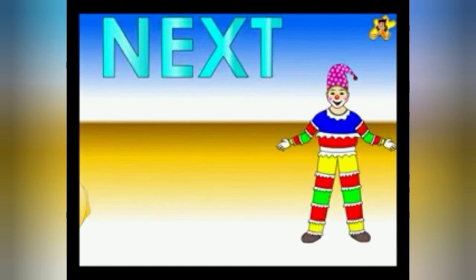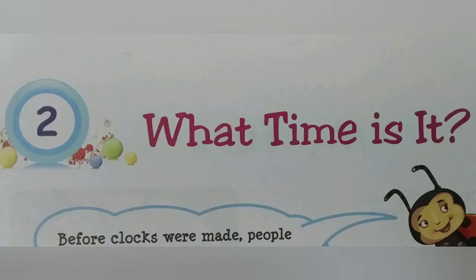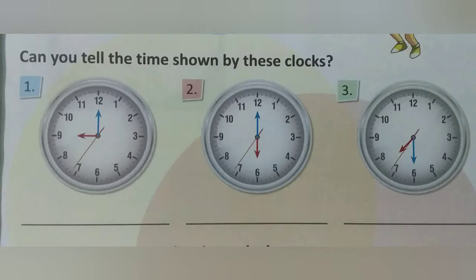My dear students, pay attention please. Next, we are going to learn Chapter 2: What time is it? Students, let's see. Can you tell the time shown by these clocks? Number 1: 9 o'clock. Number 2: 6 o'clock. Number 3: 7:30.